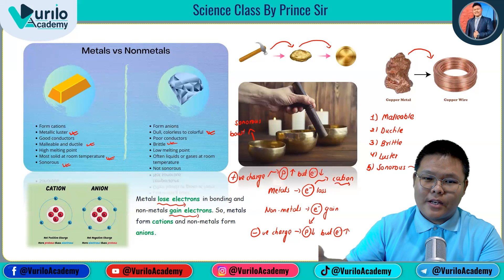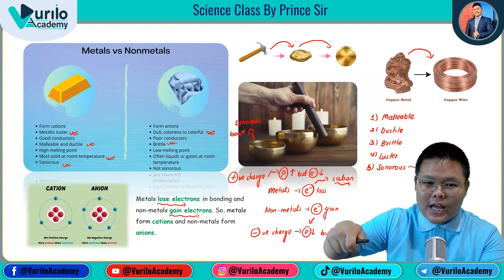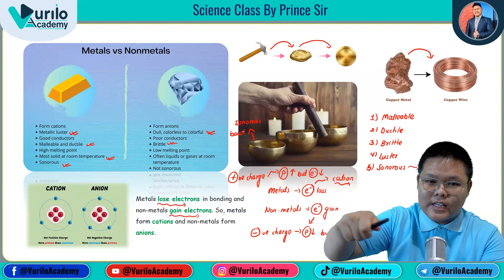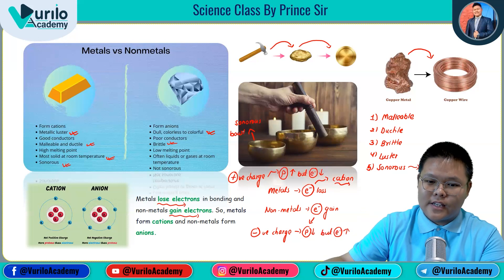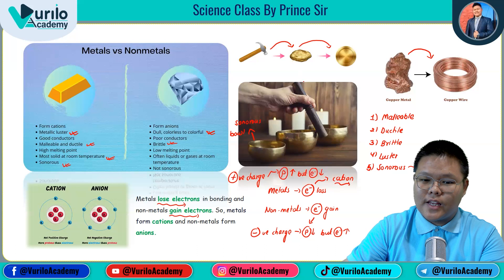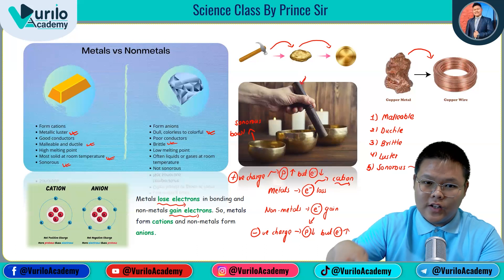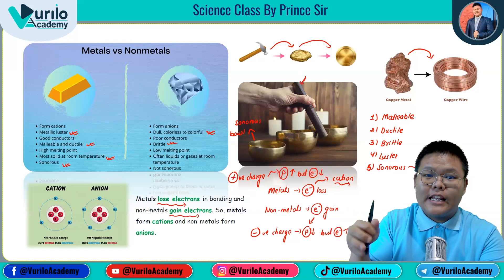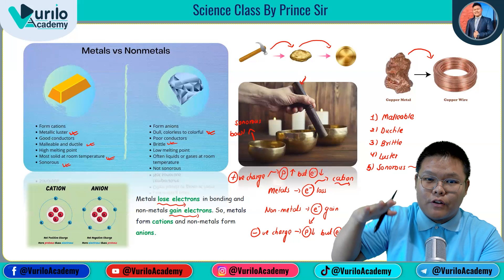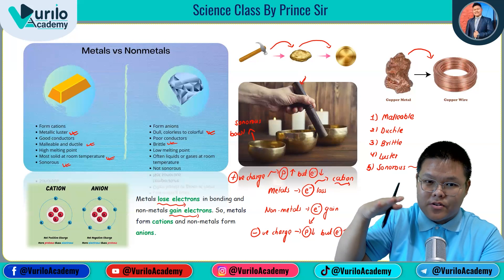When you strike the metal bell round and round with a stick, it produces a frequency of sound vibration — that is the sonorous property.